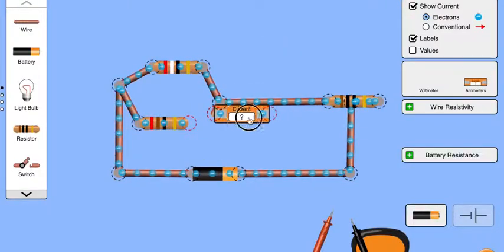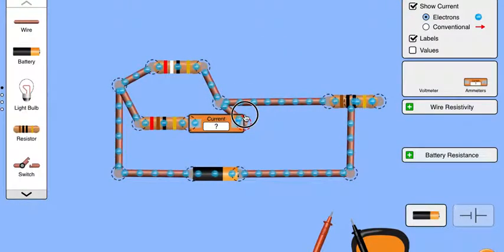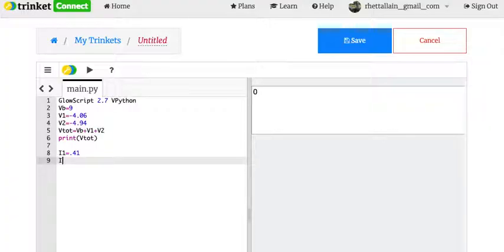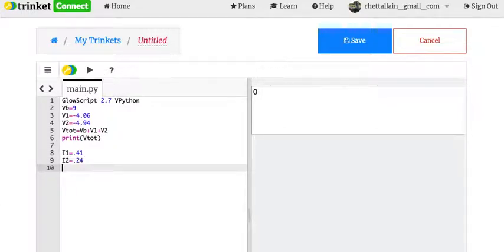Put it right here and put this right there. So I get 0.24 amps. That's I2 equals 0.24.